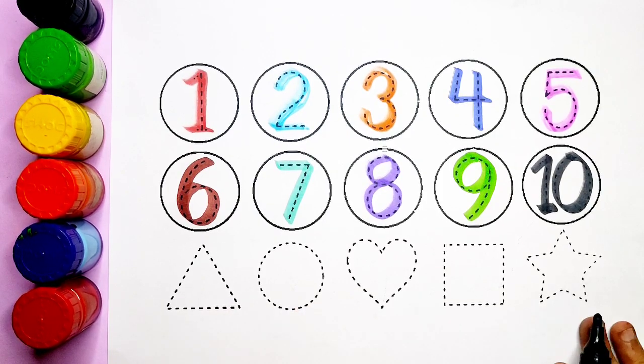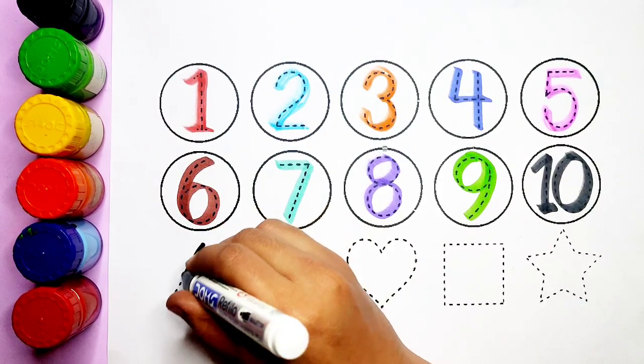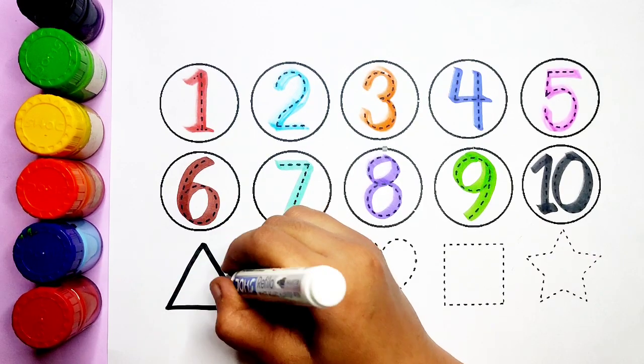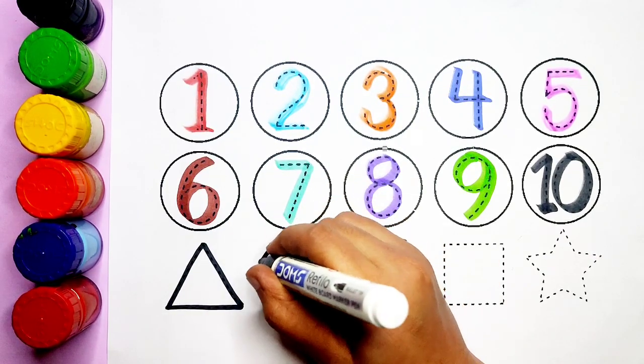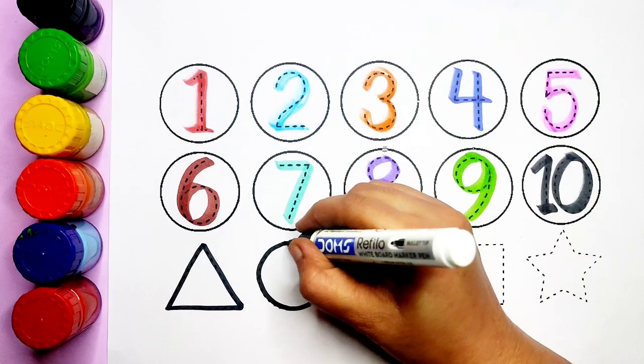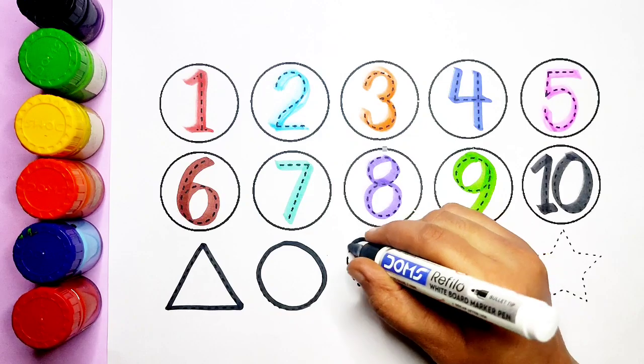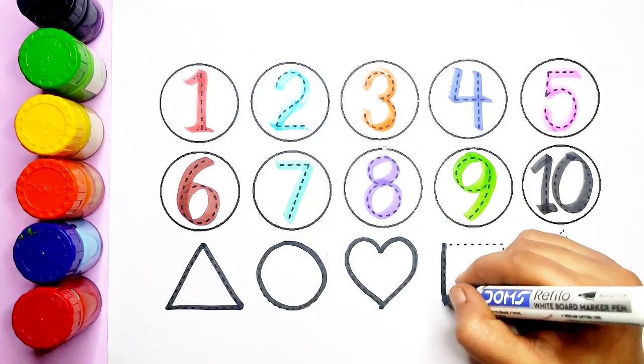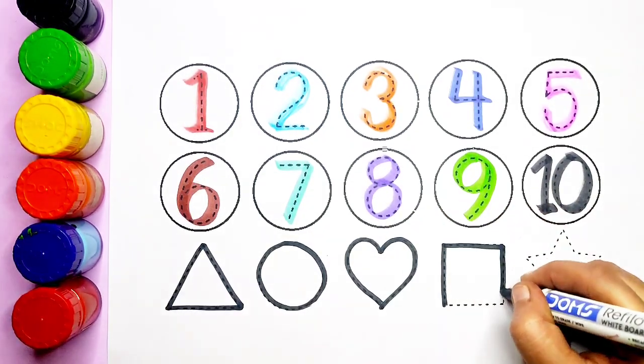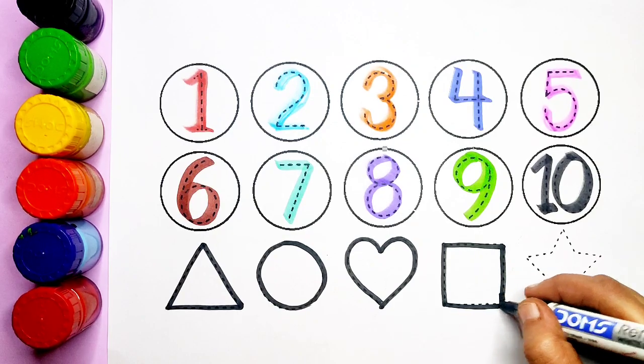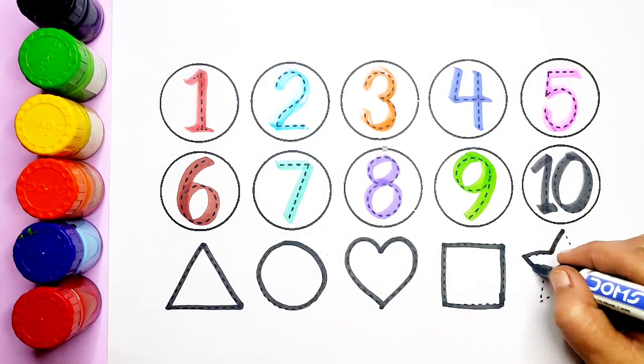Let's learn to draw some 2D shapes. Black color, triangle, circle, heart, square, star.